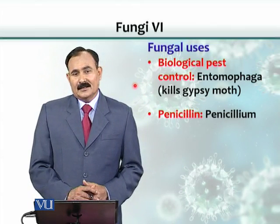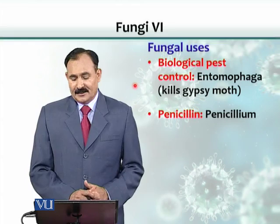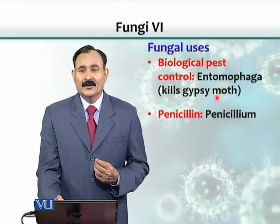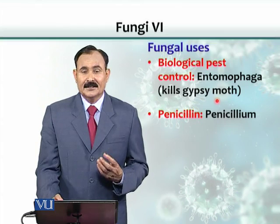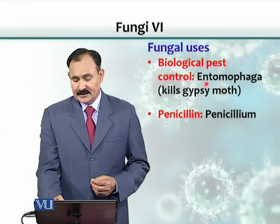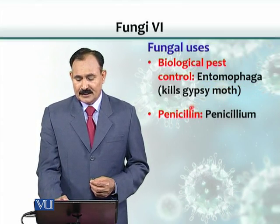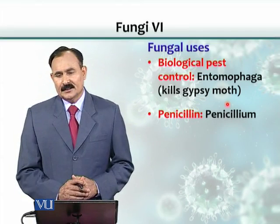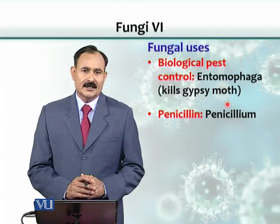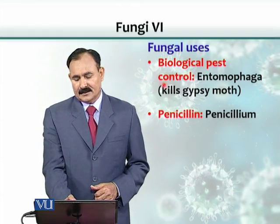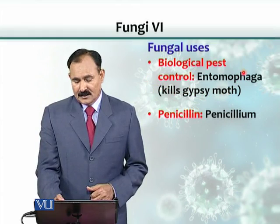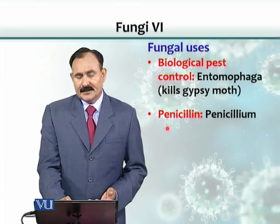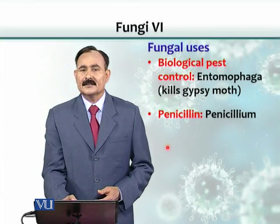Biological pest control is also an area scientists are working on. They use various fungi that cause diseases in insects — for example, a fungus called Entomophaga can kill the gypsy moth, an insect that destroys leaves of specific trees in the United States. Additionally, Penicillium is another important example, producing penicillin for us.